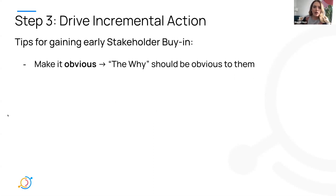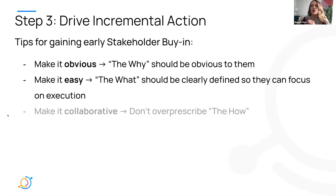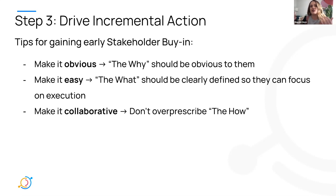If you're having a hard time thinking through what stakeholders to target, my advice is to start by making it very obvious — working with stakeholders that are really aligned with why this is worth doing. Make it easy. Help them understand exactly what you're asking of them, but also make it collaborative. Don't go in and say here's exactly what I'm looking for you to do and here's how you should do it. Don't overprescribe the how. I personally walked into a room with Google Sheets and asked engineers to document tens of thousands of data columns, and they literally laughed me out of the room. So please do not overprescribe the how.